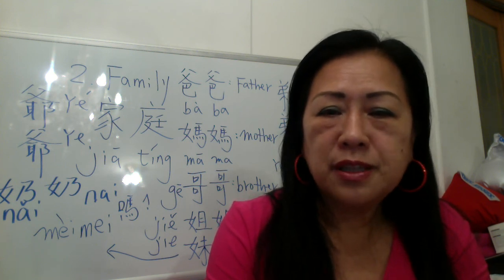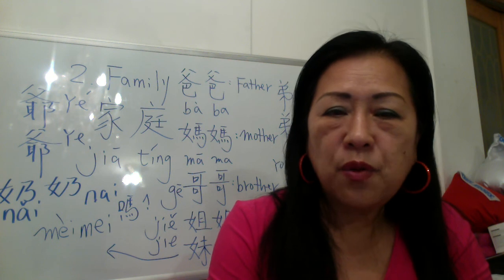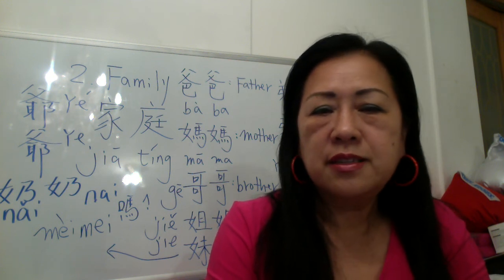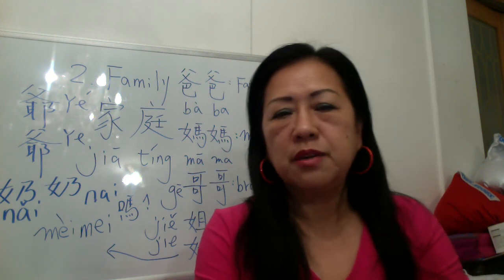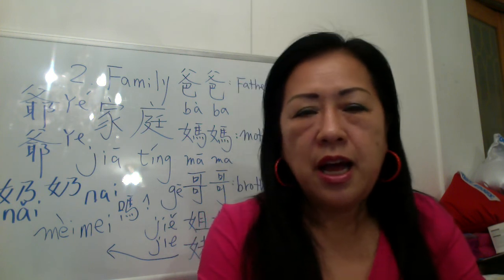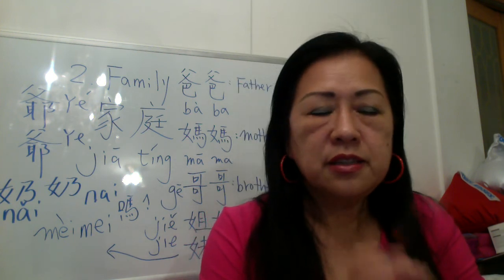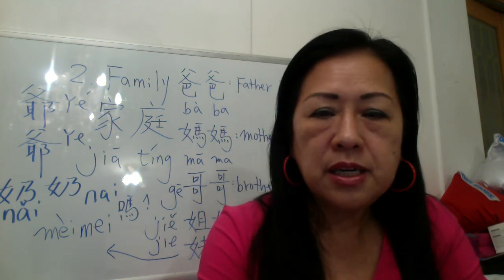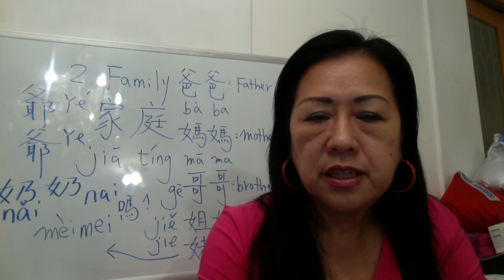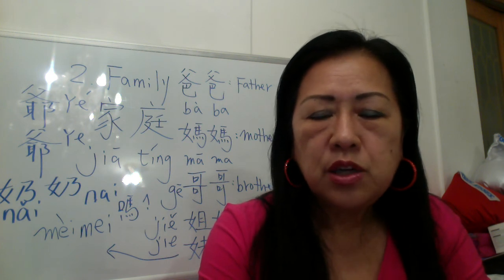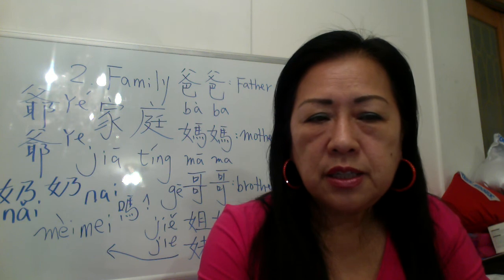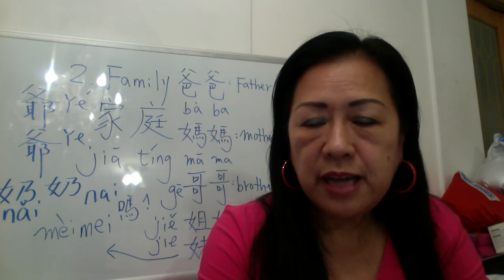Maybe you can show a picture — 全家福 — to practice: 这是我爸爸，这是我妈妈，这是我哥哥，这是我姐姐，这是我妹妹. 我很希望能够问说：你的家庭有多少人？我有爸爸，我有妈妈，我有一个哥哥，还有姐姐，还有我 — 所以我家有五个人. Practice the numbers: 一，二，三，四，五，六，七，八，九，十.